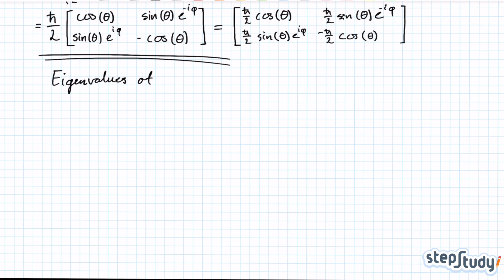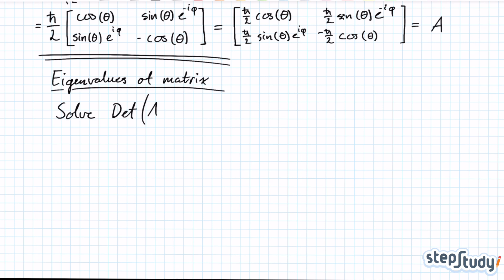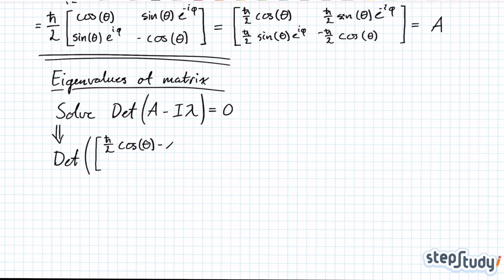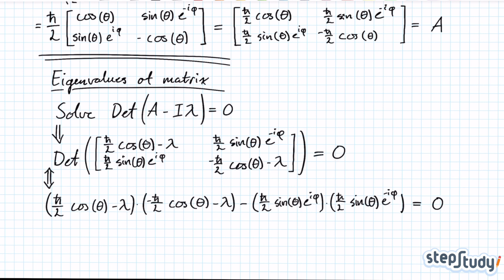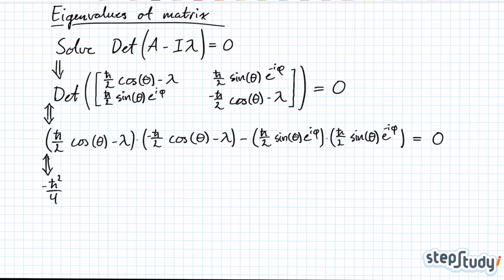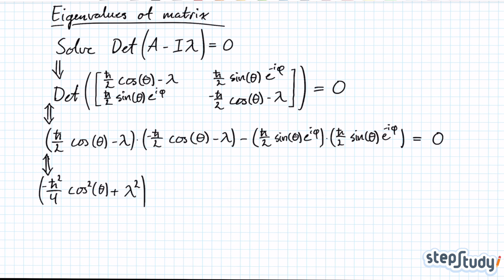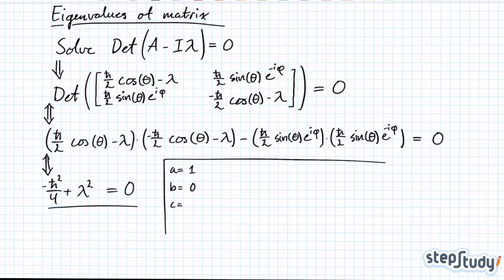Now we move on to finding the eigenvalues of that matrix. That can be done by solving the secular equation, where you solve for lambda. Since what we have here is a 2x2 matrix operator, it's simply a matter of solving a quadratic equation. In the end you'll find the eigenvalues to be the familiar h-bar over 2 and minus h-bar over 2.